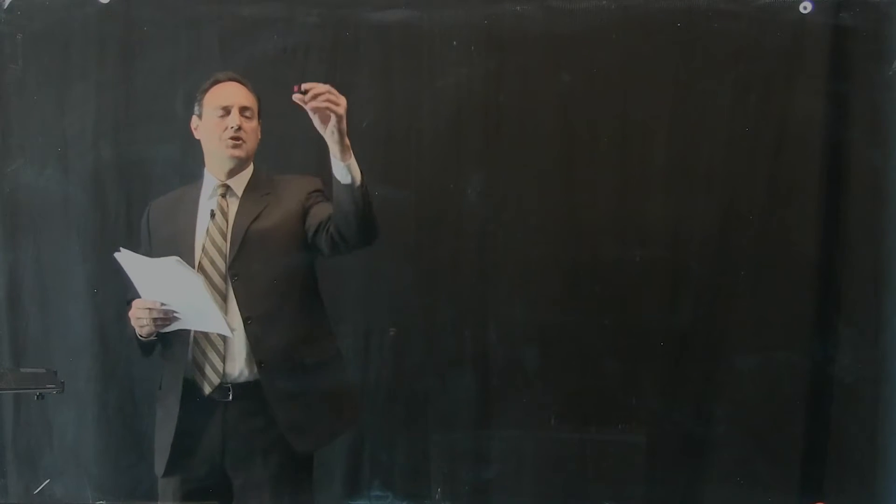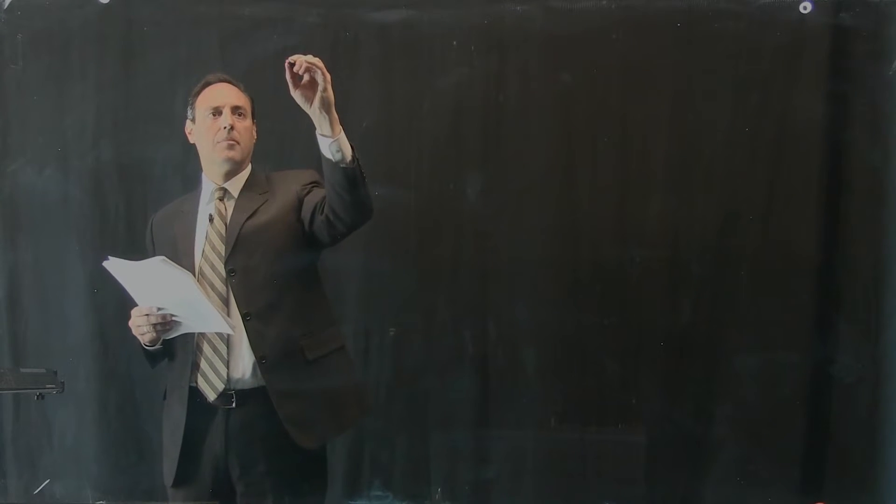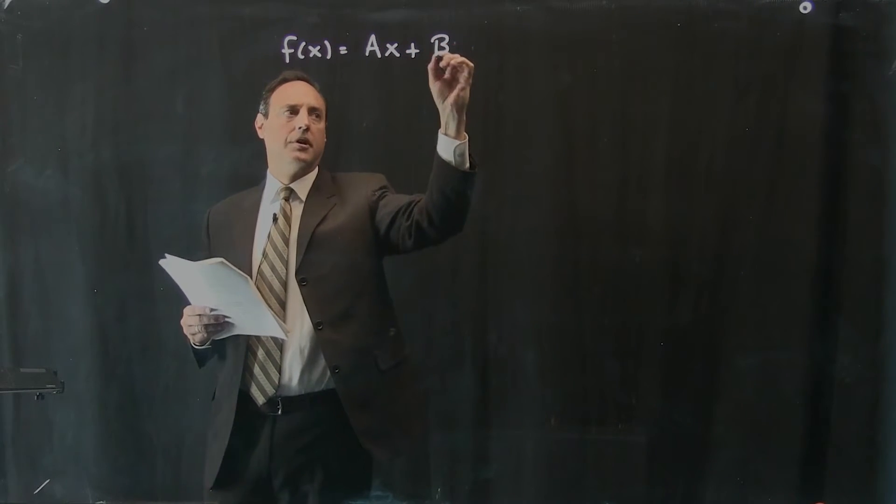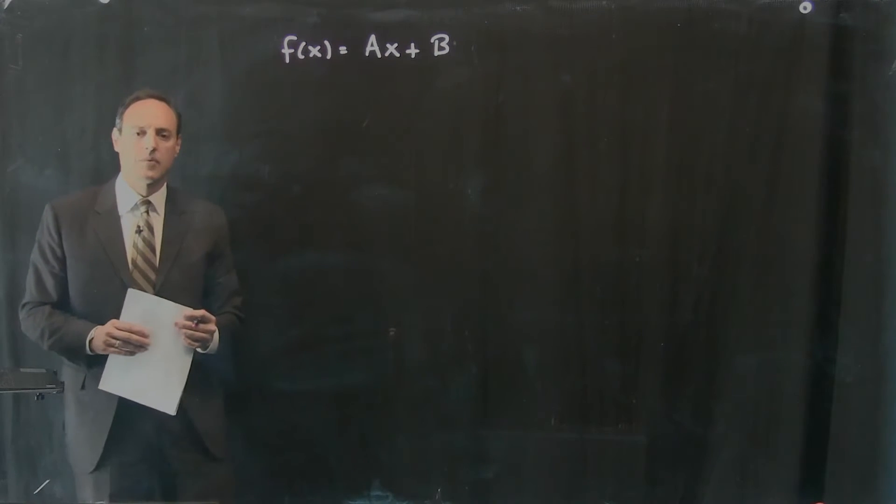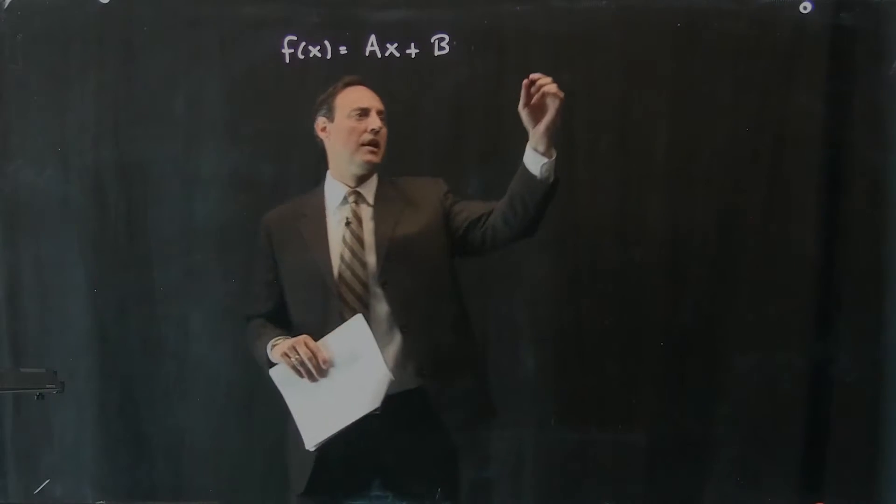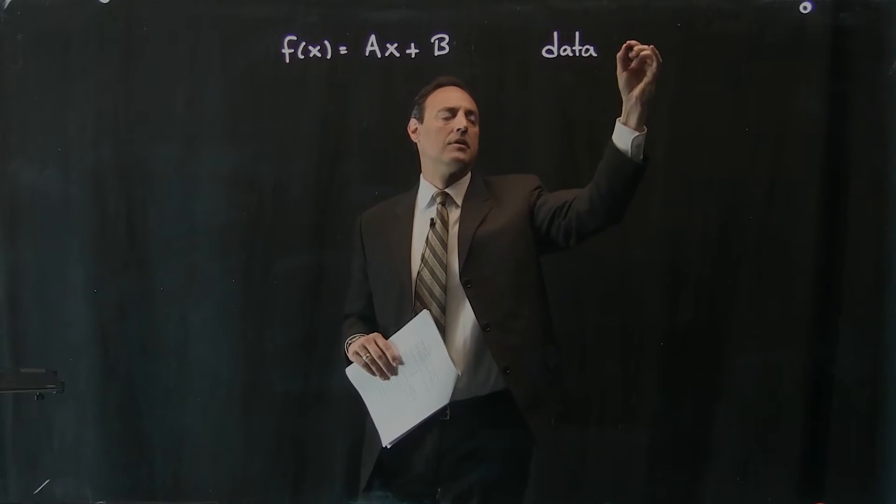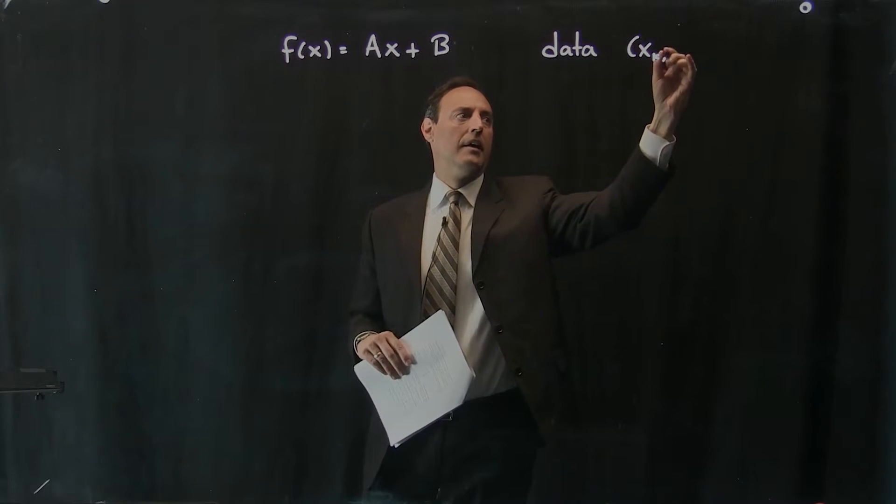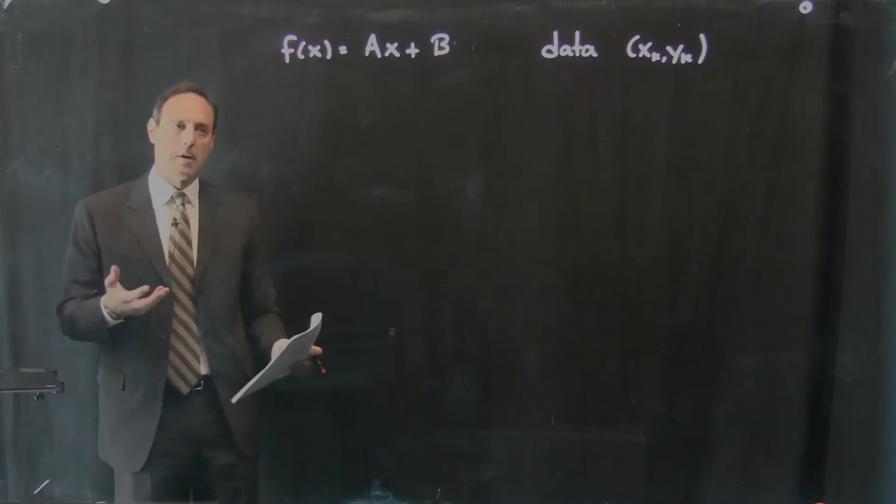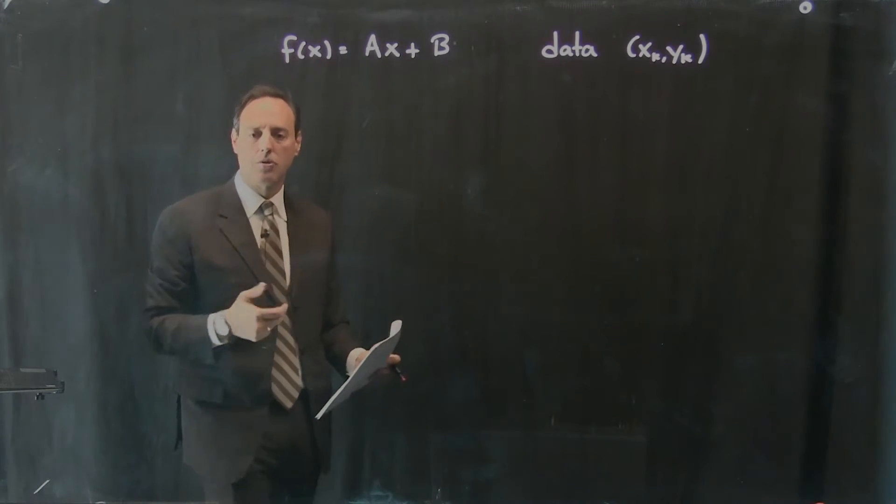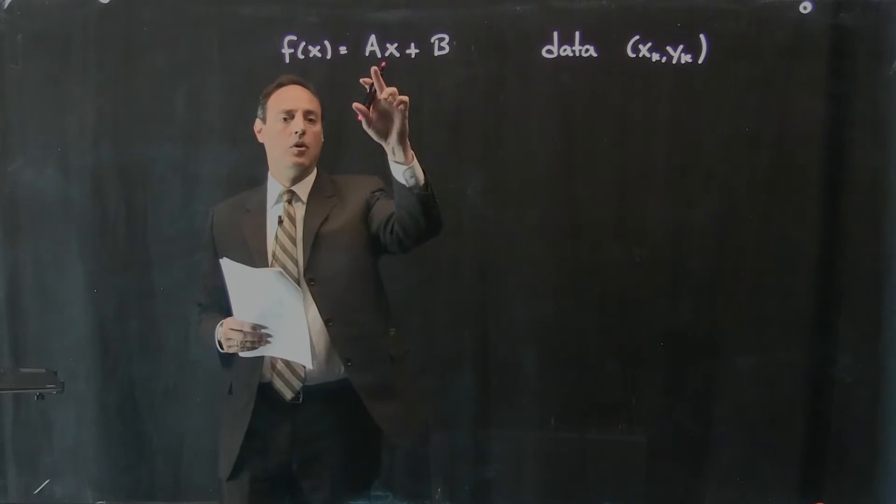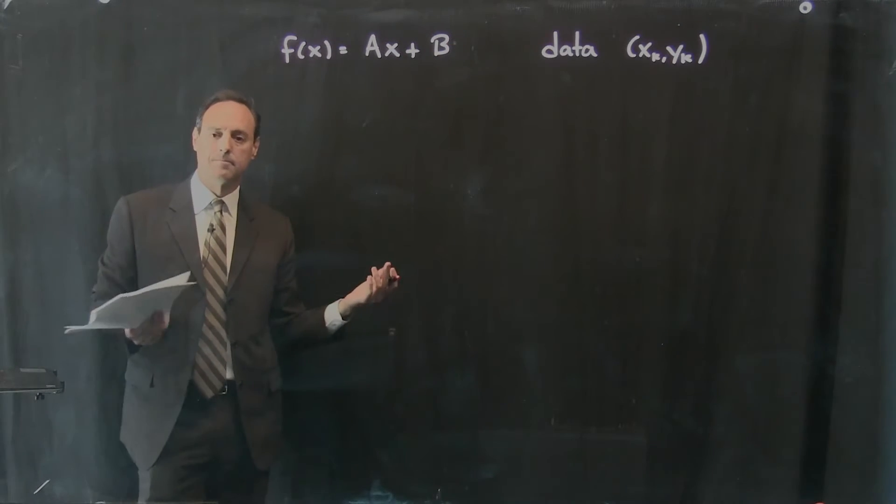Okay, so our objective is to think about this function here, which is just a line. The real question is if you give me a set of data, my data are pairings of X_k and Y_k. I have a pairing of points and I want to fit this through it. This doesn't necessarily go through any of the points, so I have this error. The objective is to figure out what are A and B.